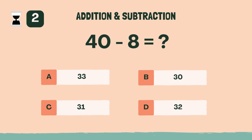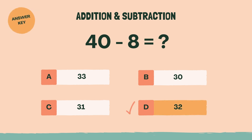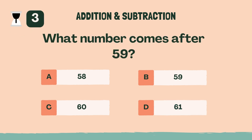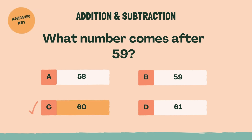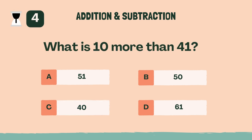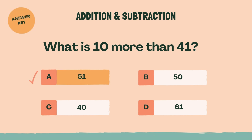What is 40 minus 8? D, 32. What number comes after 59? C, 60. What is 10 more than 41? A, 51.